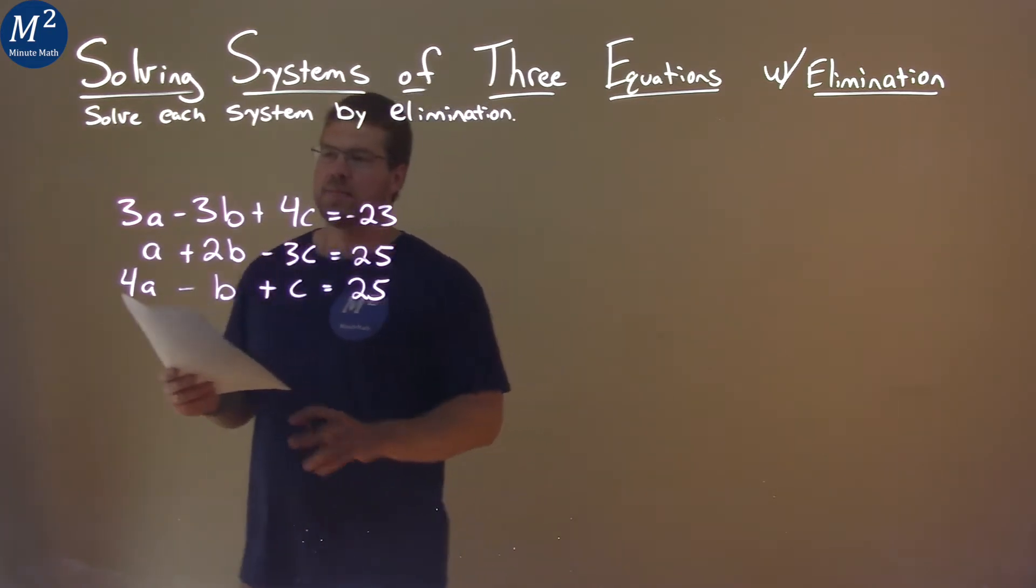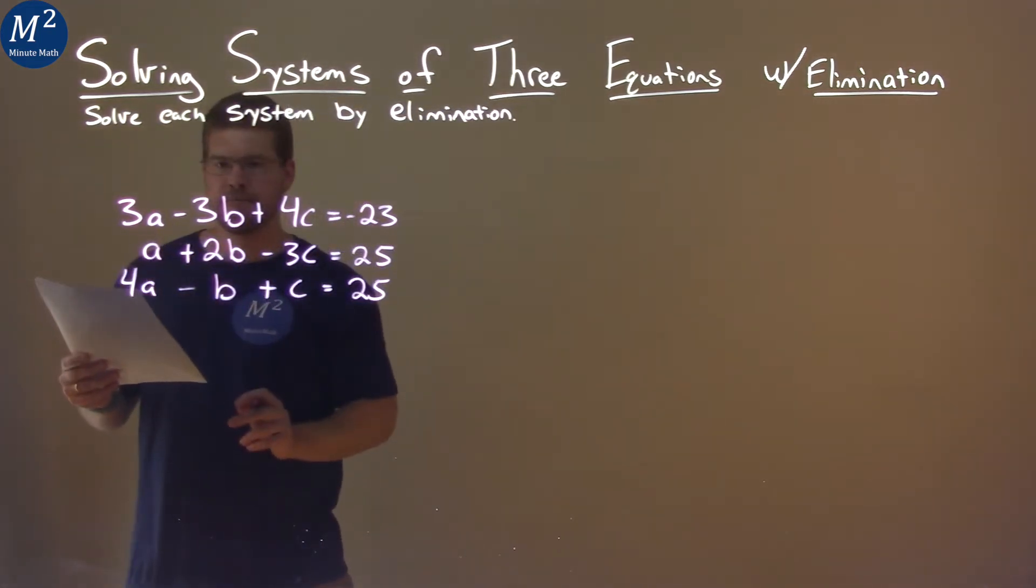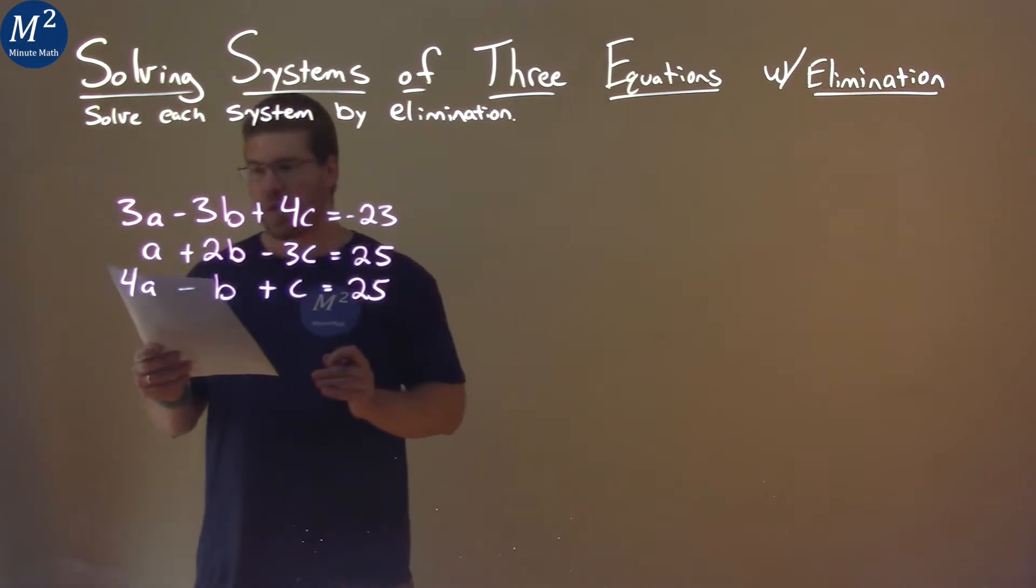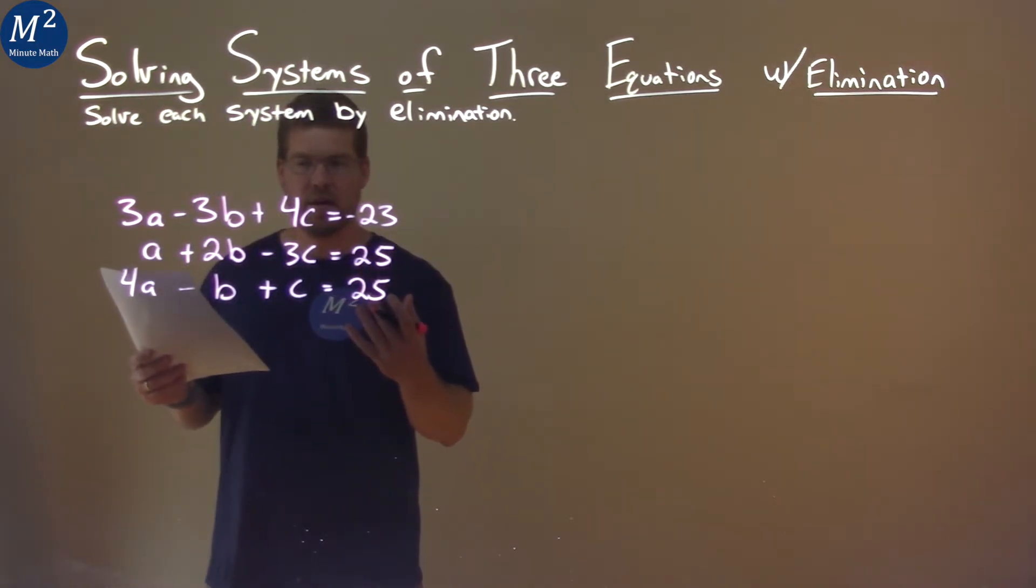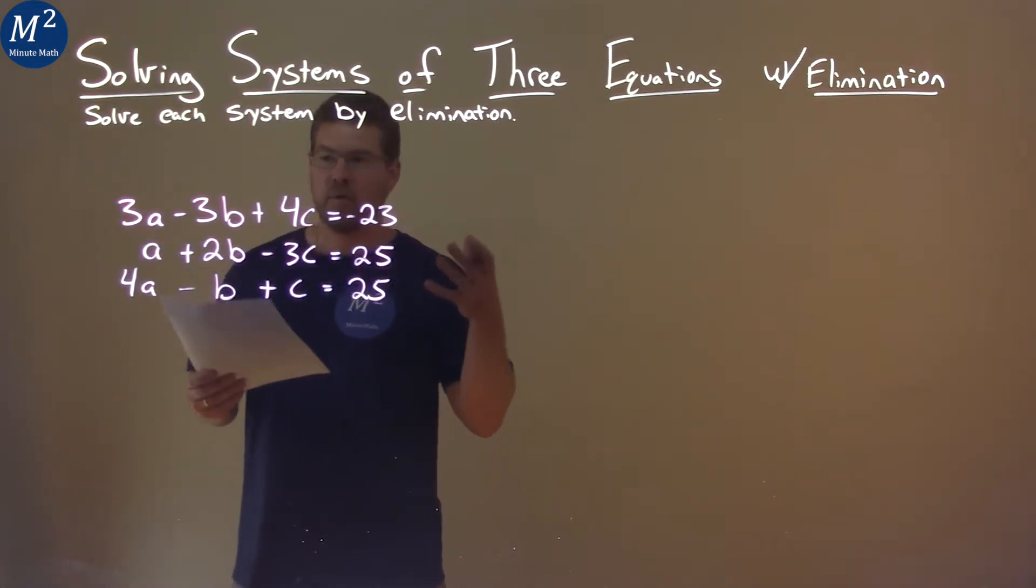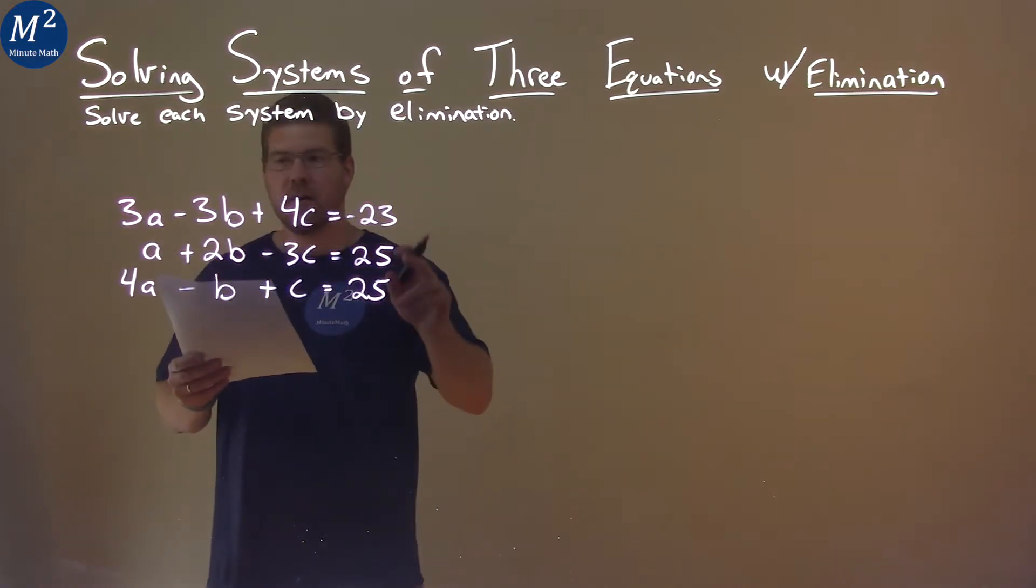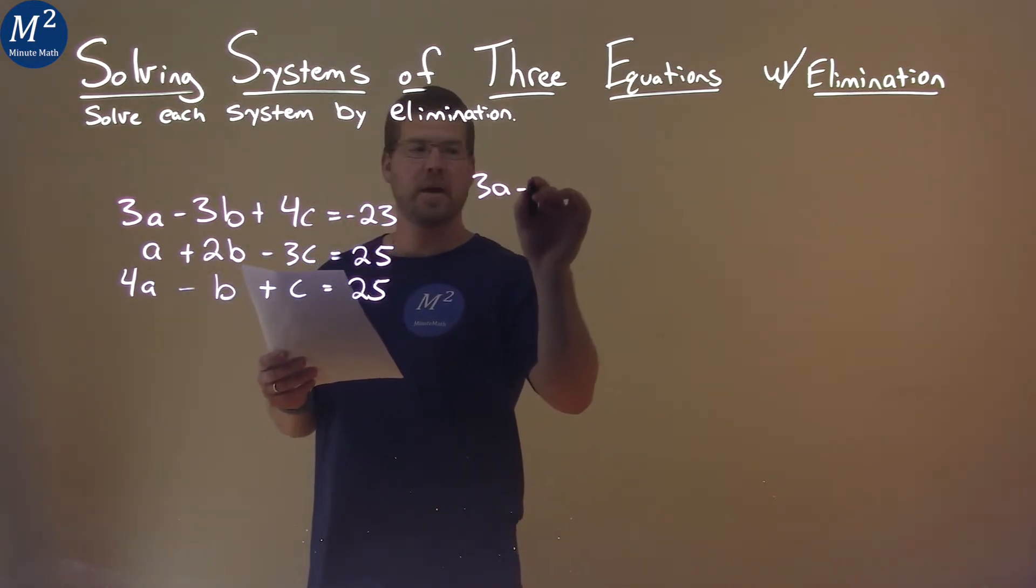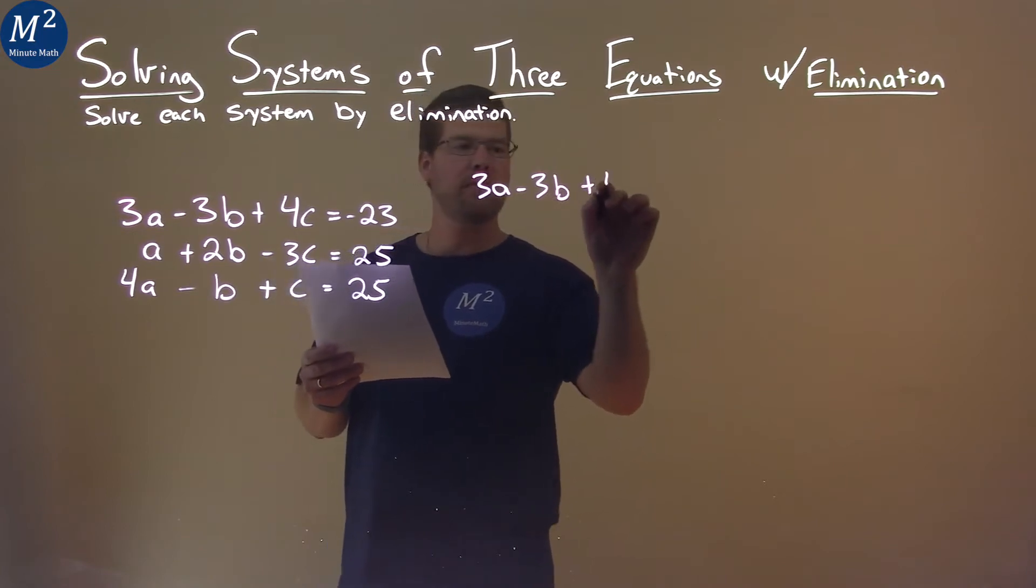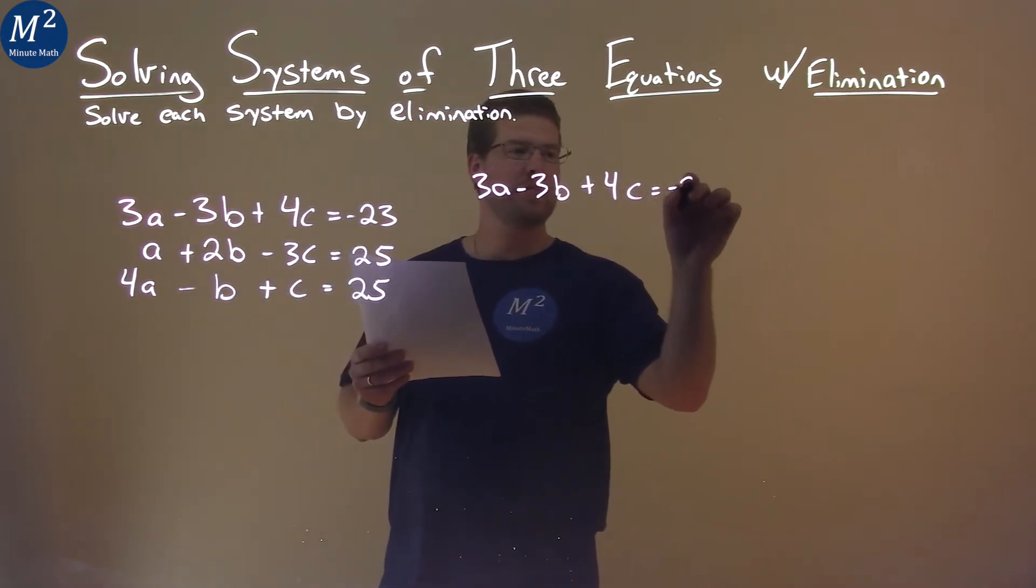Well, the first thing I'm looking at here is I see a 3A and an A. If I multiply the second equation by 3, I will also have a 3A there and I can eliminate the variable A. So let's first rewrite our first equation right here: 3A minus 3B plus 4C equals negative 23.